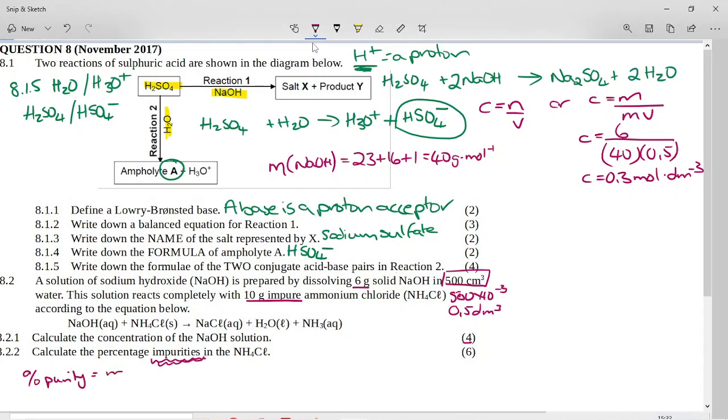So we know that if we want to calculate percentage purity, it is equal to the mass of the pure over the mass of the impure times 100.